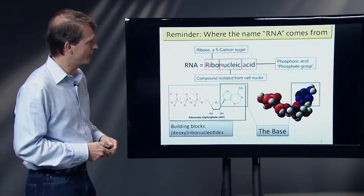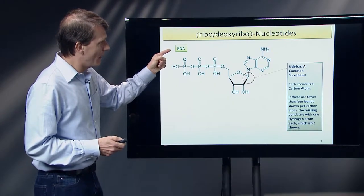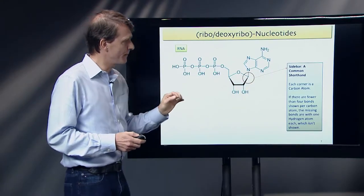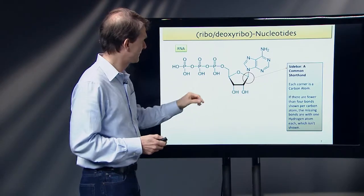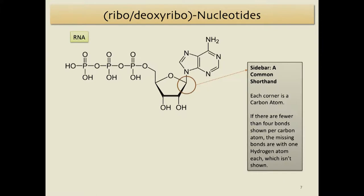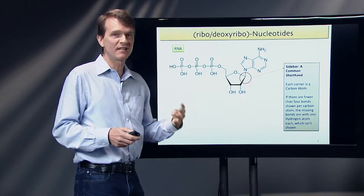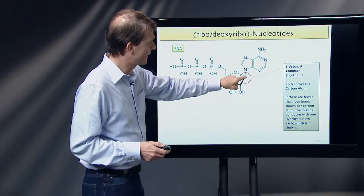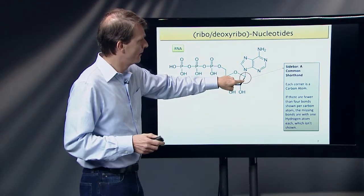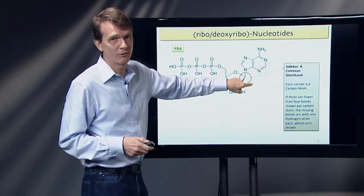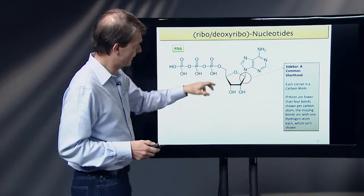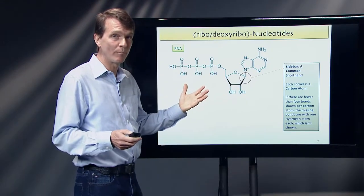DNA looks very similar to RNA. When I show these kinds of structures, let me explain how to read them. Non-carbon atoms are written out — so this is an oxygen, that's a phosphate, etc. Carbon atoms in complicated molecules are not written out because there would be too many C's. At every corner you have a carbon atom, and carbon must have four bonds. If there's a bond missing, that bond goes to hydrogen, and that hydrogen isn't shown either. So whenever you see these structures, every corner has a carbon, and when there are fewer than four bonds shown, there's a hydrogen.